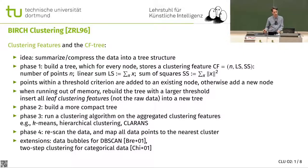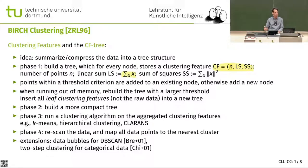The first phase is to build a tree. The tree is made by putting data into what is called a clustering feature, which consists of: a weight — the number of points contained; the linear sum, which is a vector representing the sum of the individual data points; and the sum of squares, which is the sum of the squared vector lengths, the squared norms.